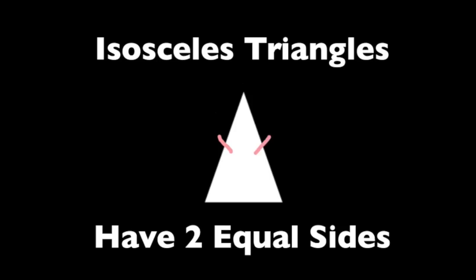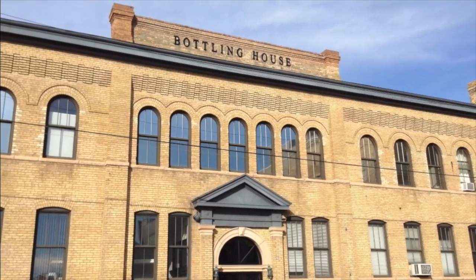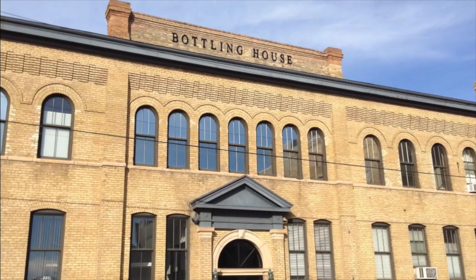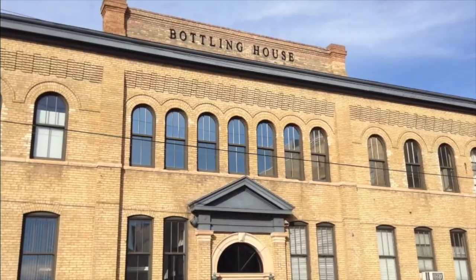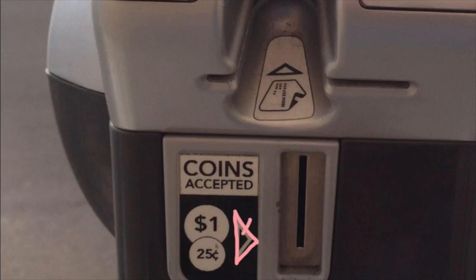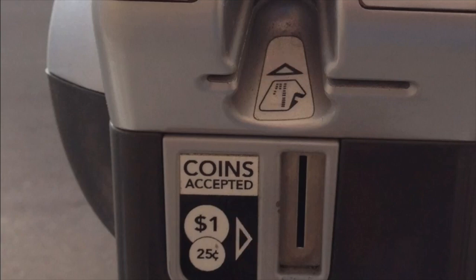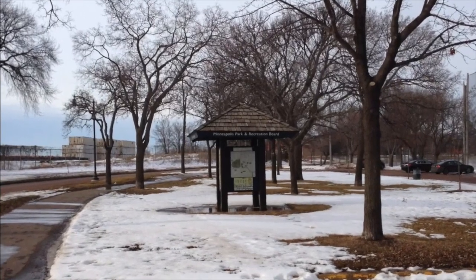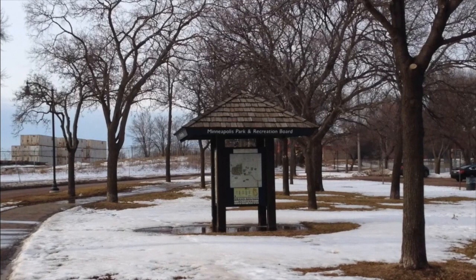Isosceles triangles have two equal sides. This building has an isosceles triangle above the main door — it has two equal sides. This parking meter actually shows two examples of isosceles triangles. Not only do isosceles triangles have two equal sides, but they will also have two equal base angles. Here's one more example of an isosceles triangle.